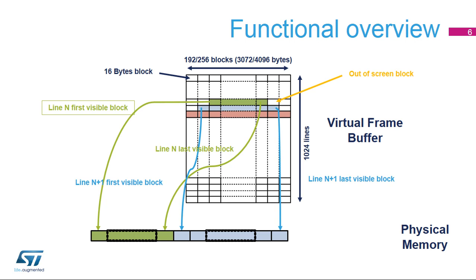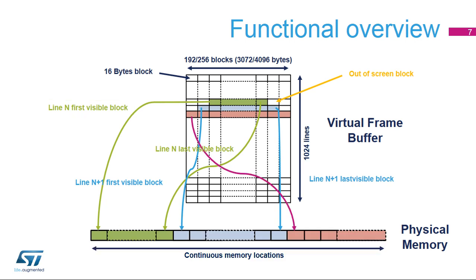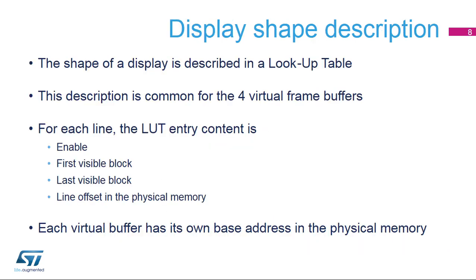All the first and last block numbers are stored in a lookup table, and all the visible blocks are stored in the physical memory in a continuous way, saving a huge amount of space for non-rectangular display shapes. All the line parameters are stored in an internal lookup table, and the description is the same for all four virtual frame buffers.